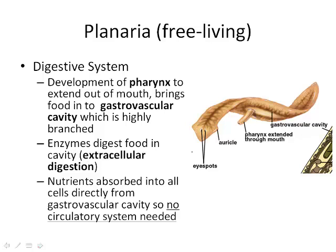For the digestive system of free-living flatworms: a pharynx brings food into the gastrovascular cavity, enzymes break down the food, and nutrients are absorbed directly into the cells from the cavity. There's no need for a circulatory system because nutrients can simply diffuse — moving from an area of high concentration to low concentration — directly into surrounding cells.